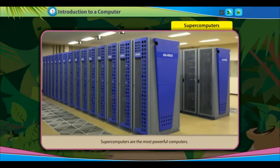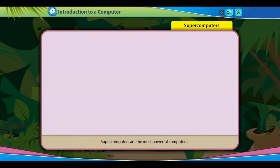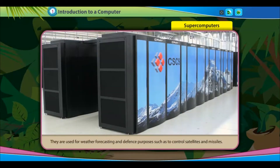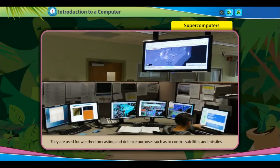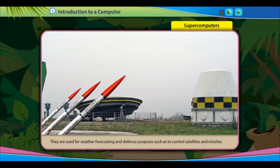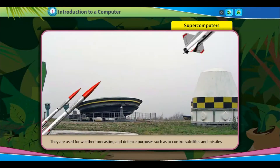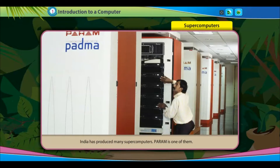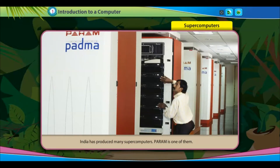Supercomputers are the most powerful computers. They are very expensive and are used for weather forecasting and defense purposes, such as to control satellites and missiles. India has produced many supercomputers — Param is one of them.